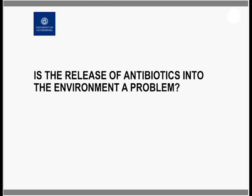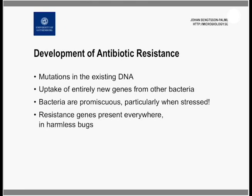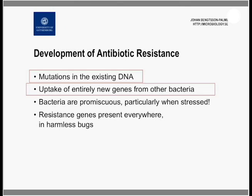Is the release of antibiotics into the environment a problem? It is a problem locally for many reasons, but it is also a global problem — particularly because of the development of antibiotic resistance. Antibiotic resistance can develop through two main mechanisms. The first is through mutations in the bacteria's own DNA, creating small changes that make the bacteria better able to handle the antibiotic. The second is that bacteria can take up an entirely new gene from another bacterium, which suddenly renders it resistant to the antibiotic.